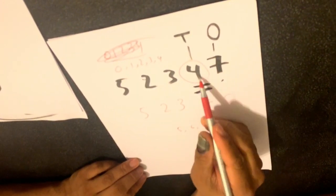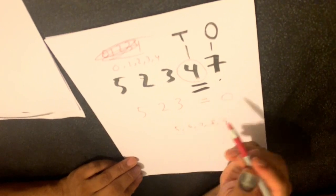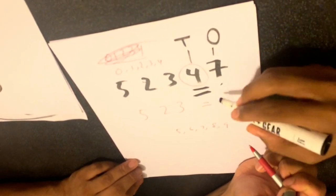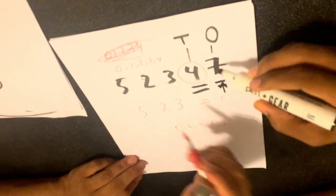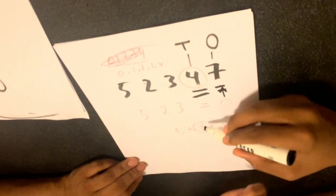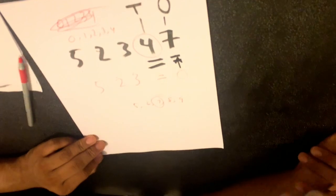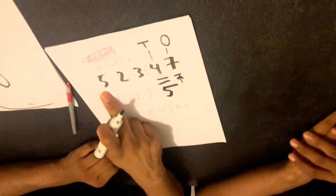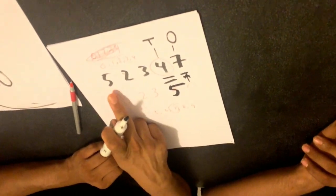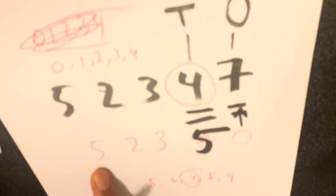Now this time, what would be the target — do you keep it or add 1? The number next to the target is 7. 7 is right here. So you have to add 1. That becomes 5. So 52,347 rounded to the 10th place becomes 52,350.